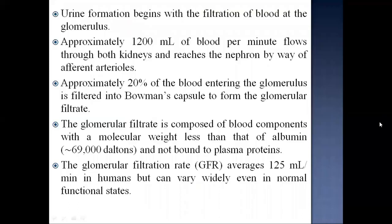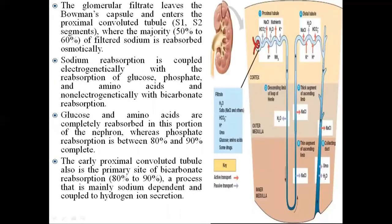Urine formation begins with the filtration of blood at the glomerulus. Approximately 1,200 ml of blood per minute flows through both kidneys via afferent arterioles. About 20% of blood entering the glomerulus is filtered into Bowman's capsule to form the glomerular filtrate, composed of blood components with molecular weight less than albumin (less than 69,000 daltons) and not bound to plasma proteins. The glomerular filtration rate (GFR) averages 125 ml per minute in humans.